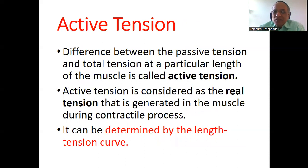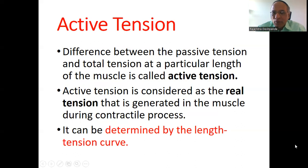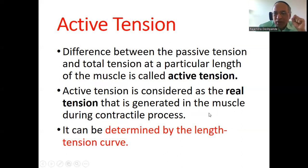What is active tension? The difference between the passive tension and the total tension at a particular length of the muscle is called active tension. This will be asked in oral exams and also in MCQs — passive tension, total tension, or active tension. So you must remember this definition: the difference between the passive tension and the total tension at a particular length of the muscle fiber is called active tension.